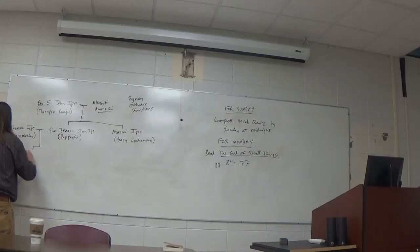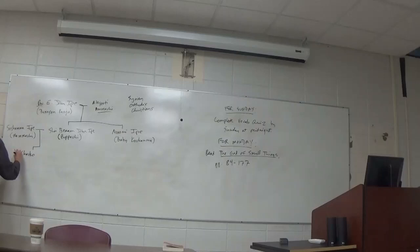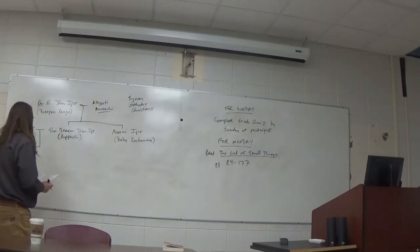So Papachi is married to a woman named Soshama, who everyone mostly simply calls Mamachi, or grandmother. And their children are Chaco, who is divorced from Margaret Kachama. And their daughter is Sophie Moll. And Moll is a Malayalam word that means girl. So her name is Sophie Girl.